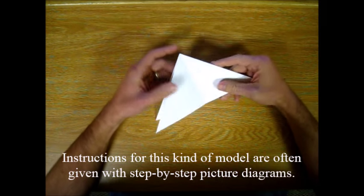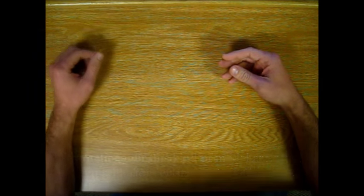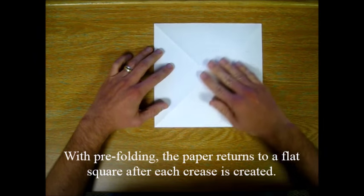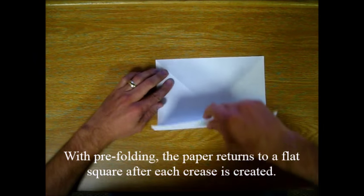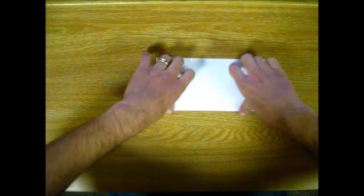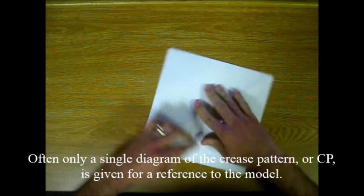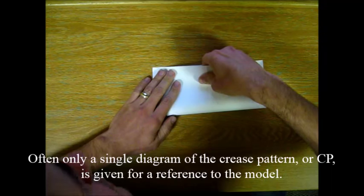Instructions for this kind of model are often given with step-by-step picture diagrams. With pre-folding the paper returns to a flat square after each crease is created. Often only a single diagram of the crease pattern or CP is given for a reference to the model.